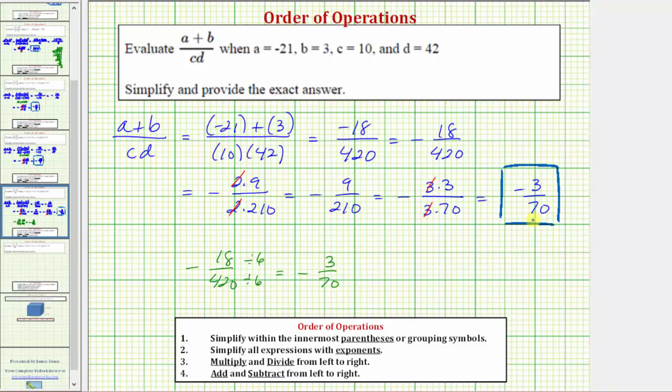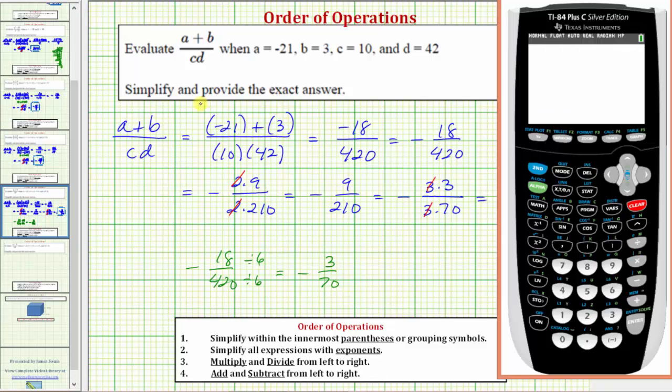Before we go, let's check our work on the graphing calculator. To do this, we'll enter this expression here, but we need to include a set of parentheses around the numerator and denominator. So we'll begin with an open parenthesis to begin the numerator. We do have some unnecessary parentheses here, but we'll go ahead and enter the expression in this form anyway. So we have, in the numerator, negative twenty-one plus three, closed parenthesis to end the numerator, divided by open parenthesis to begin the denominator, and then we have ten times forty-two, and a closed parenthesis to end the denominator.